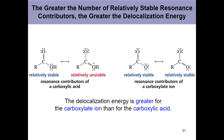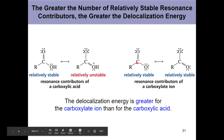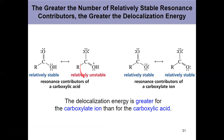That stability depends on both the number of resonance contributors and their predicted stability. Looking at carboxylic acid and carboxylate, both have two resonance contributors, so the number is the same. However, carboxylate has two stable resonance contributors, whereas one of the carboxylic acid's contributors is unstable. The carboxylate ion therefore has greater delocalization energy — it's more stable.